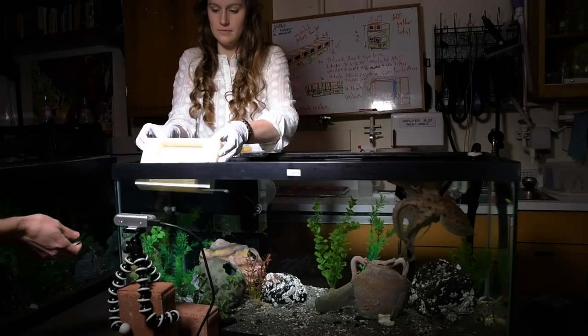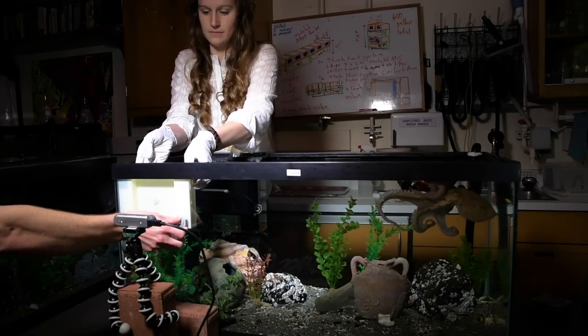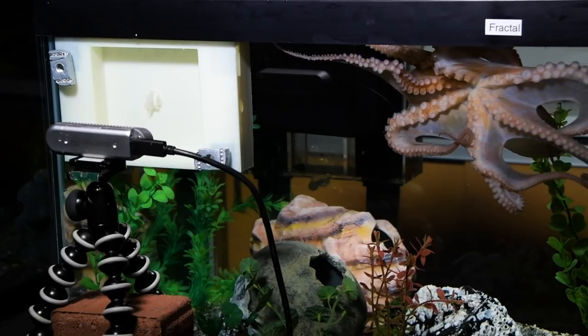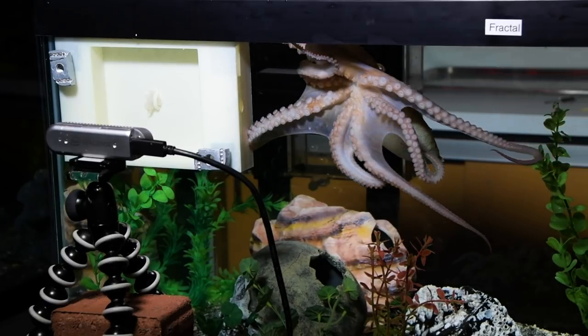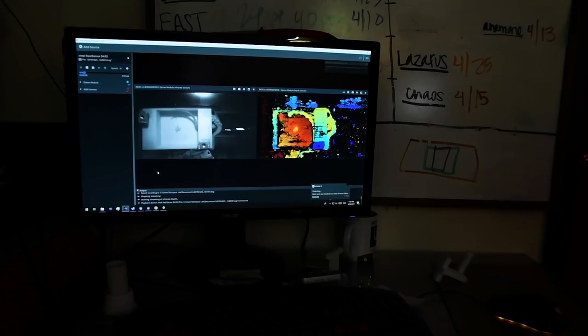Where we began with two-dimensional tracking, now our methods are more sophisticated. We now use three-dimensional tracking cameras, which are stereo cameras. And this is helping us understand the strategies that the octopus is using to control its distributed mind.